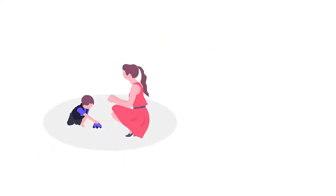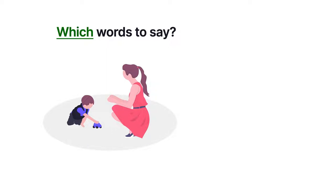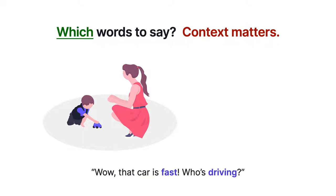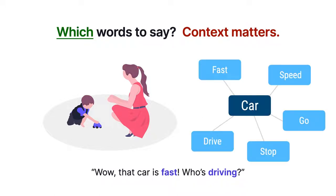But imagine a play situation with a young child. A parent might be aware that engaging the child is important, but what exactly should they say? In this case, an understanding of context is critical. By knowing that the child is playing with a car toy, a parent can engage the child with dialogue related to cars such as, "Wow, that car is fast — who's driving?" The child, in turn, can form associations between the world and language. However, existing systems do not have an understanding of context.